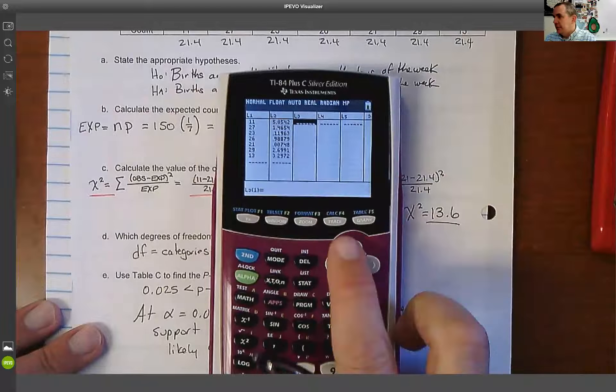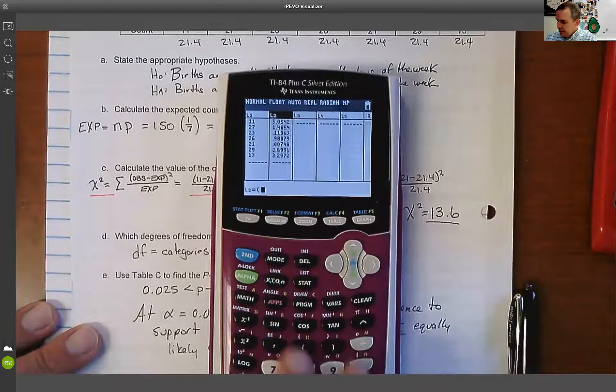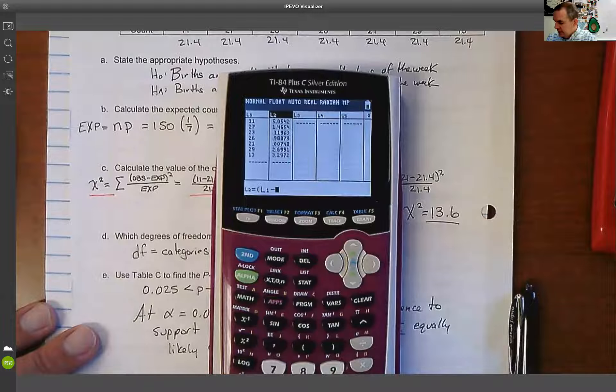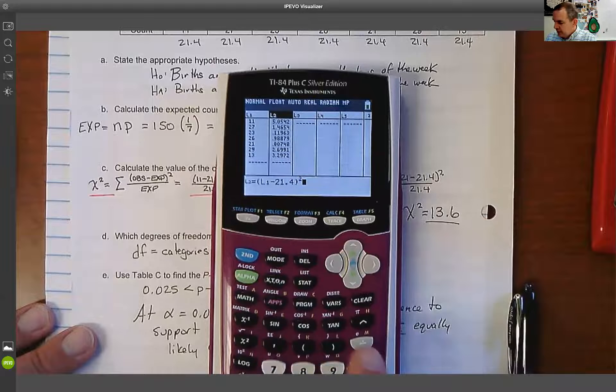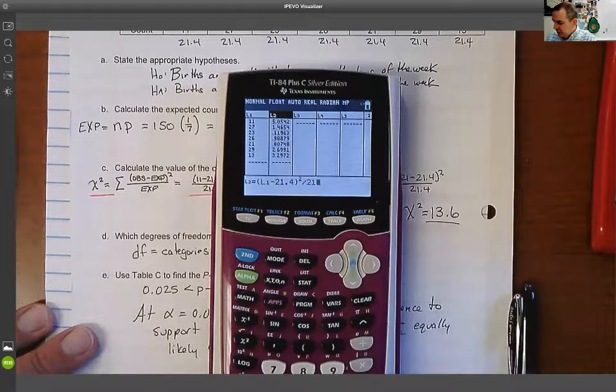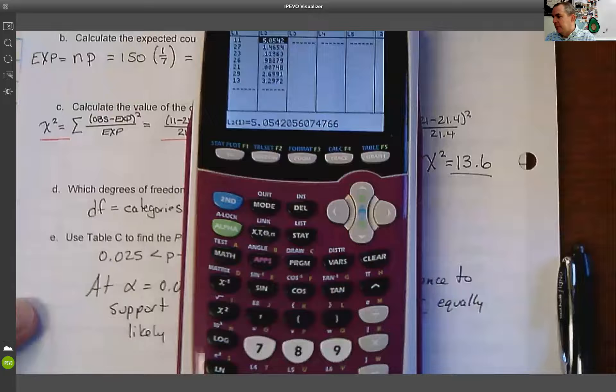And what I actually did is I put the formula up here in L2. So what I did is I said, how far is my observed L1 from that expected 21.4 squared divided by 21.4, that expected. And what that's going to give me is it's going to give me a bunch of component values.